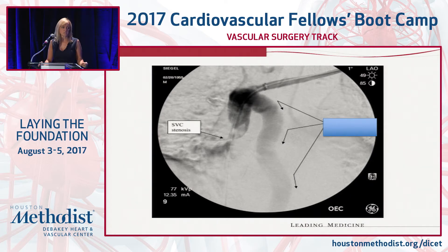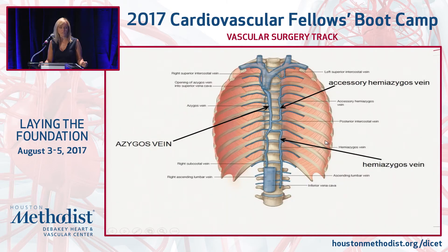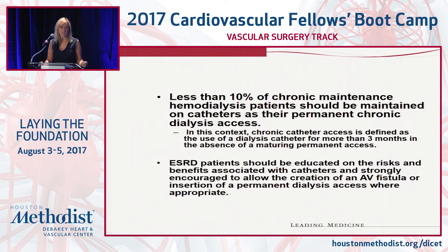Here is a picture of an SVC stenosis. When the superior vena cava becomes stenotic, collaterals develop to allow for venous drainage. That large vessel there is the azygous vein — a very large azygous vein can be misleading for the SVC if you're not paying attention. This diagram shows the accessory hemi-azygous and the azygous veins, which are important to keep in mind.